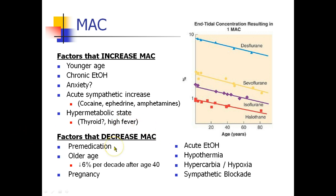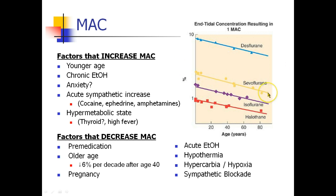We also know many factors that decrease MAC: administration of other medications like fentanyl and Versed; older age, which reliably decreases MAC by 6% per decade after age 40. For example, sevoflurane's MAC is about 2% at age 40, so a 90-year-old would have their MAC decreased by 5 decades times 6% per decade — that's a 30% decrease.